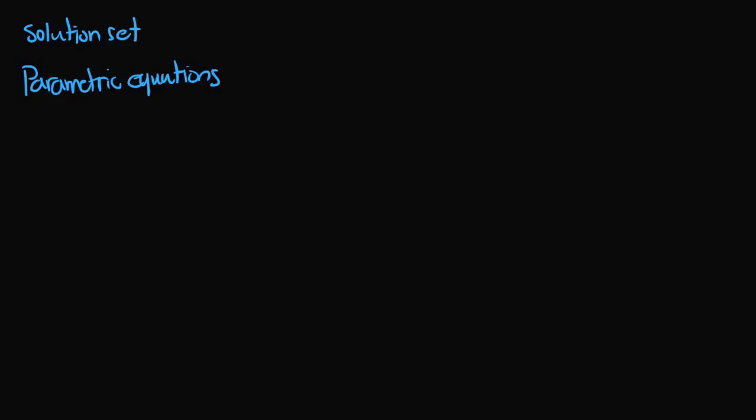If we wanted to solve the linear equation x1 plus 3x2 is equal to 6, we would have to solve for one of the variables in terms of the other, since there are two variables and only one equation. So we can solve for x1 in terms of x2. If I subtract 3x2 from both sides, I get x1 is equal to 6 minus 3x2.